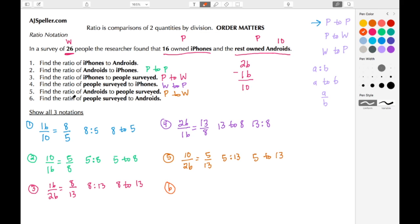And I see a typo here, this should be ratio. We need to find the ratio of people surveyed to Android users. Well, people surveyed is the whole and Android users is the part, so this here is a whole to part. So the whole is 26, the part is 10. We can take half of both numbers because they're even, so this here is 13 fifths. We can write this as 13 colon 5 and also as 13 to 5.